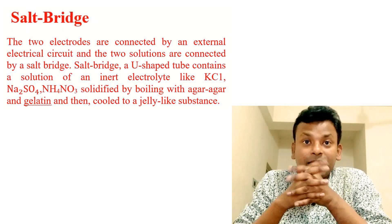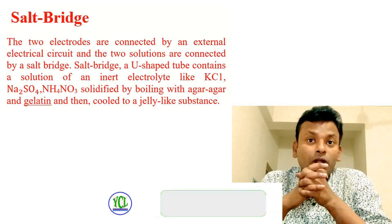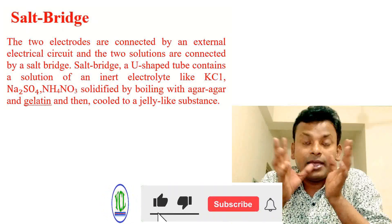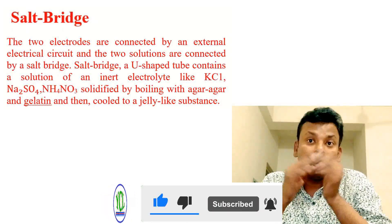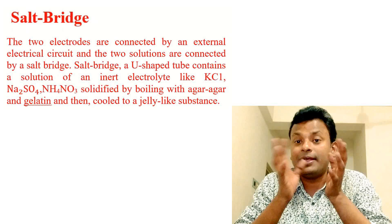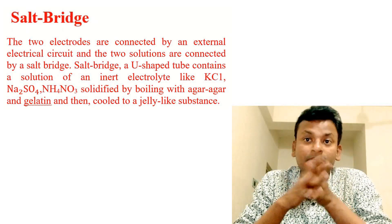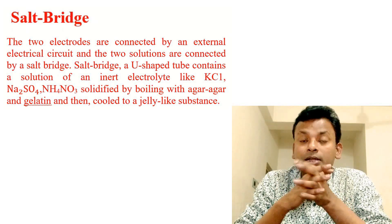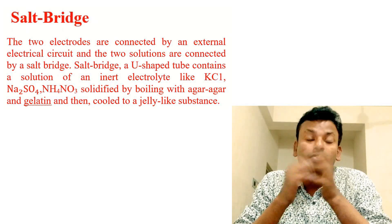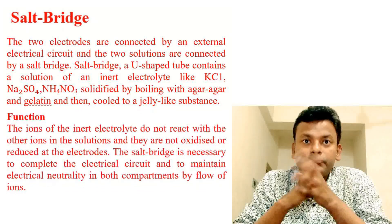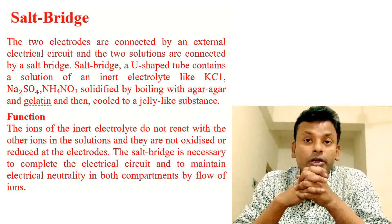The two electrodes are connected by an external electrical circuit, and the two solutions are connected by a salt bridge. A salt bridge is a U-shaped tube containing a solution of an inert electrolyte such as KCl (potassium chloride), sodium sulfate, or ammonium nitrate, solidified by boiling with agar-agar or gelatin and then cooled to a jelly-like substance.